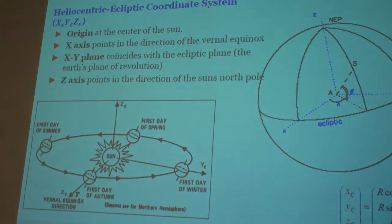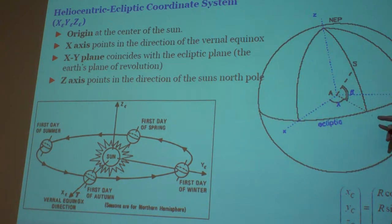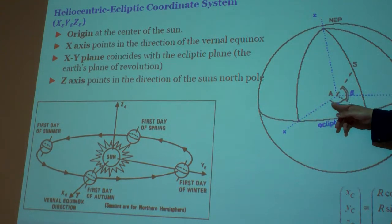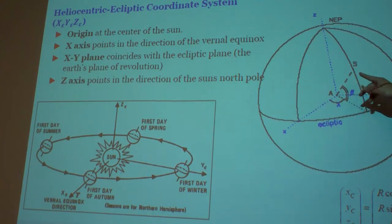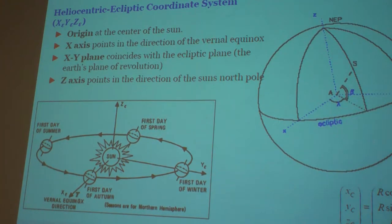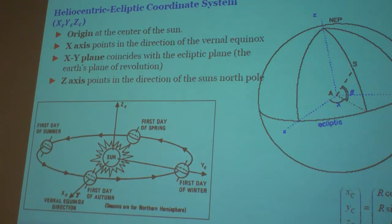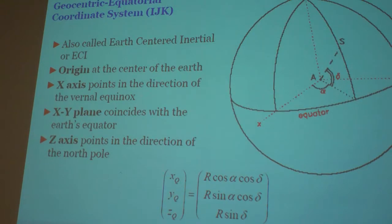That is the system we use to describe the solar system. For this system, they still use RA and declination for describing the locations of objects.